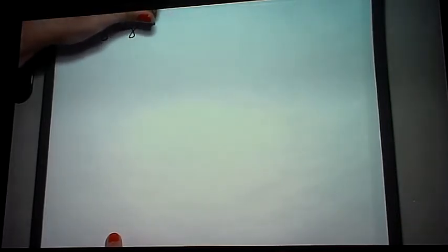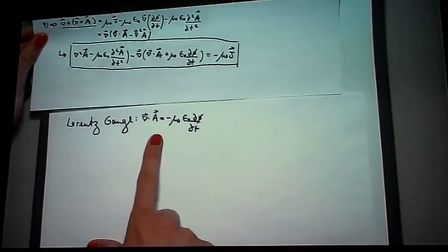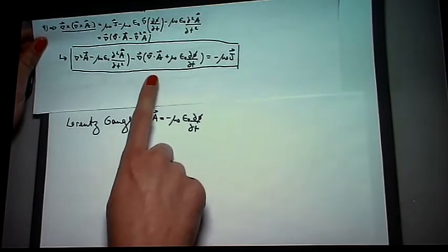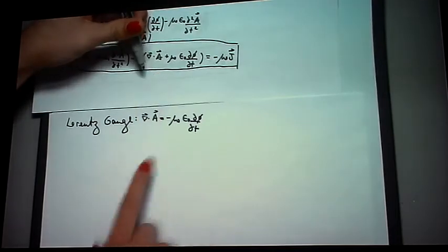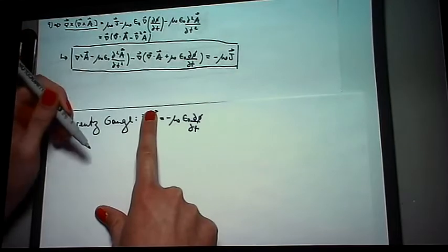So, the Lorentz gauge is this. As you can see, this gauge is designed to get rid of the second term in the second framed equation, over here. So, by plugging this in here, this will go to zero.